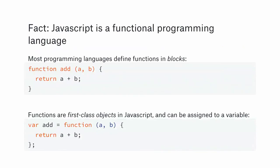First of all, JavaScript is functional. Functions are first-class objects in JavaScript. In addition to defining functions in a block like Python, Ruby, or C, you can define functions inline in JavaScript with the same syntax. That function can be assigned to a variable, and that variable holds the function. This allows you to pass functions around quite easily without function pointers or handlers like in Java.